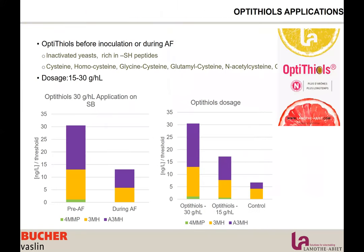Optitiol is applied before inoculation or during alcoholic fermentation. It is autolyzed yeast rich in sulfur peptides, with a dosage between 15 and 30 grams per hectoliter. If added pre-fermentation or at the beginning of inoculation, the result is much stronger than adding it during fermentation — we highly recommend using it pre-fermentation as early as possible. The dosage response is completely linear: the more you use, the more thiols you will get. At 30 g/hL, you get double the result of 15 g/hL.